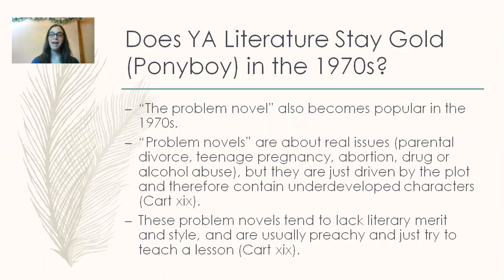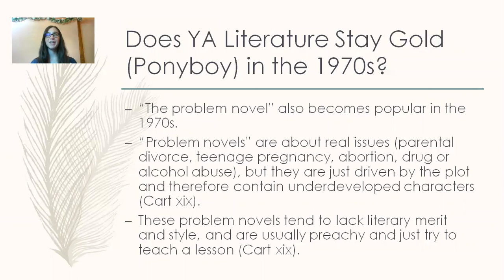Some critics ask if the 1970s literature truly maintains its golden age. The Problem Novel becomes popular in the 1970s. Problem Novels are about real issues — parental divorce, teenage pregnancy, abortion, drug or alcohol abuse — but they are driven by plot and therefore contain underdeveloped characters. These Problem Novels tend to lack literary merit and style, are usually preachy, and just try to teach a lesson. They're not regarded very highly by literary critics.